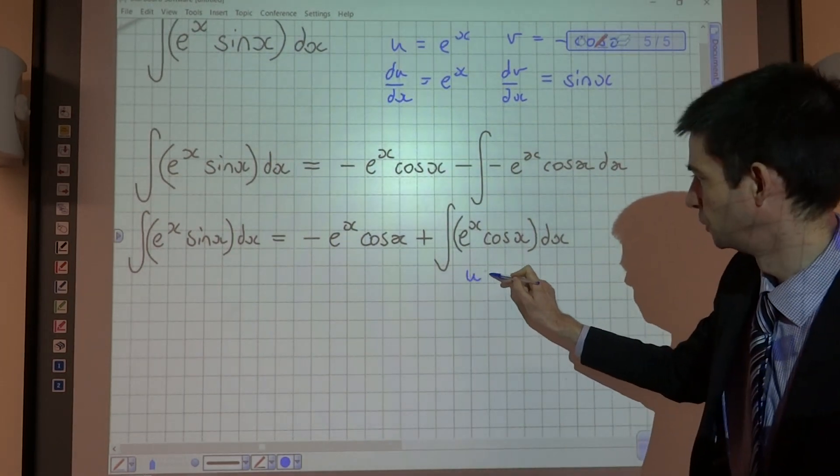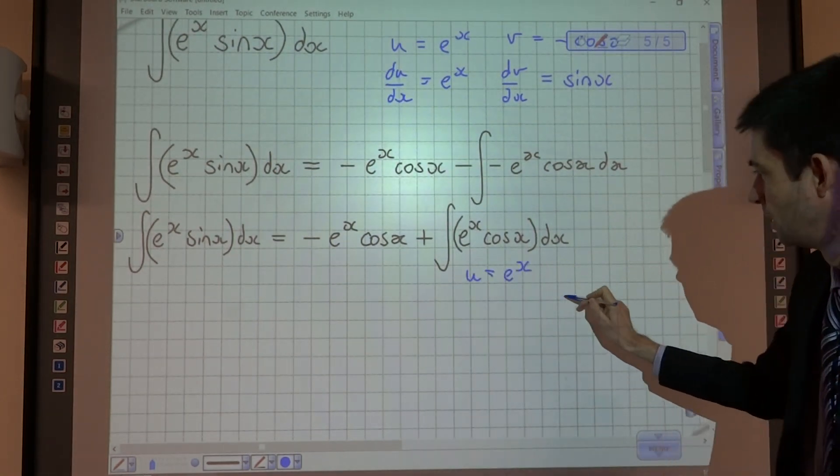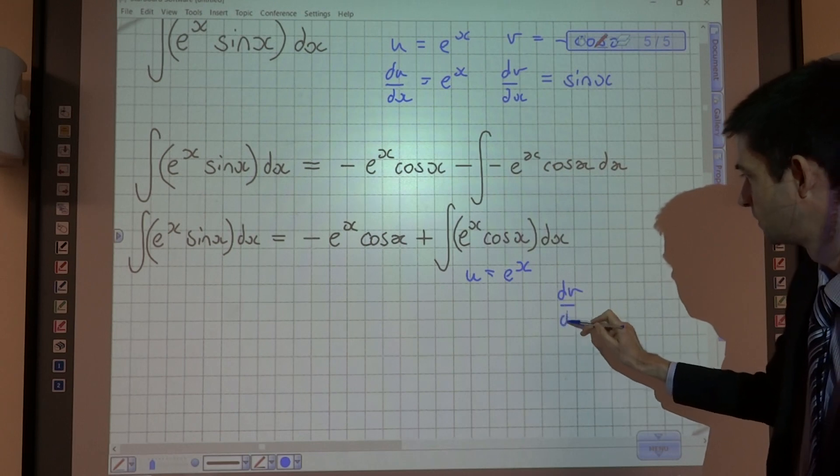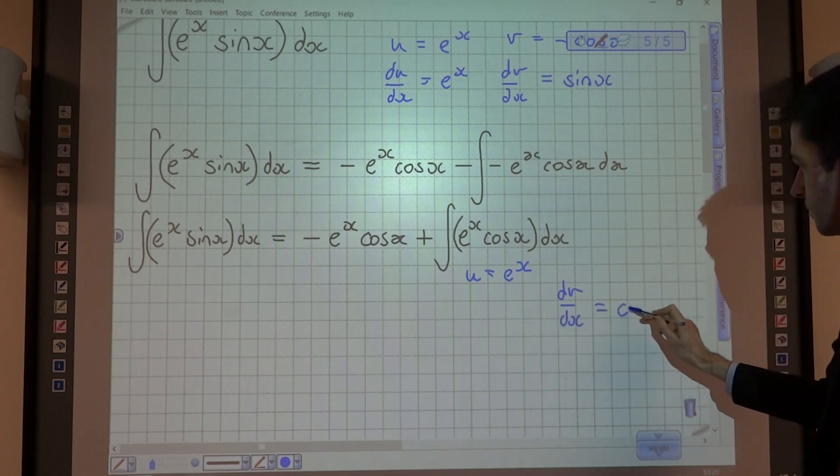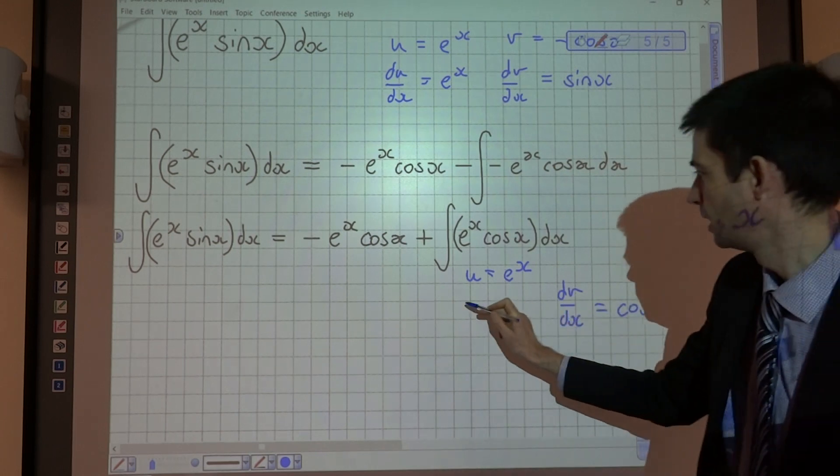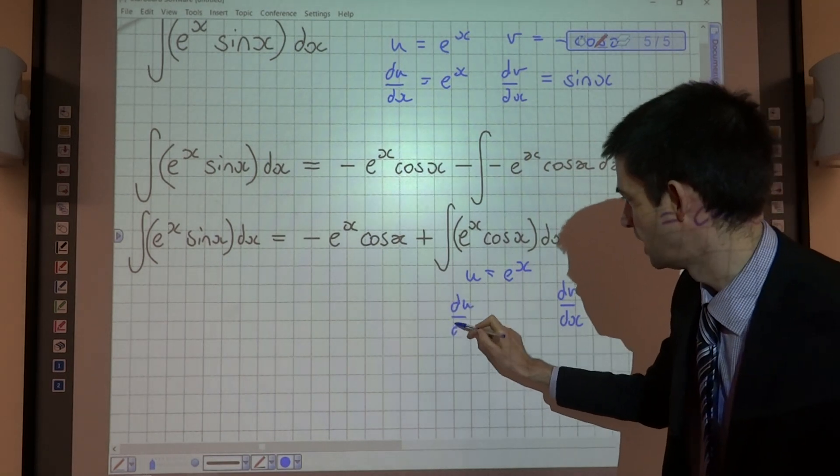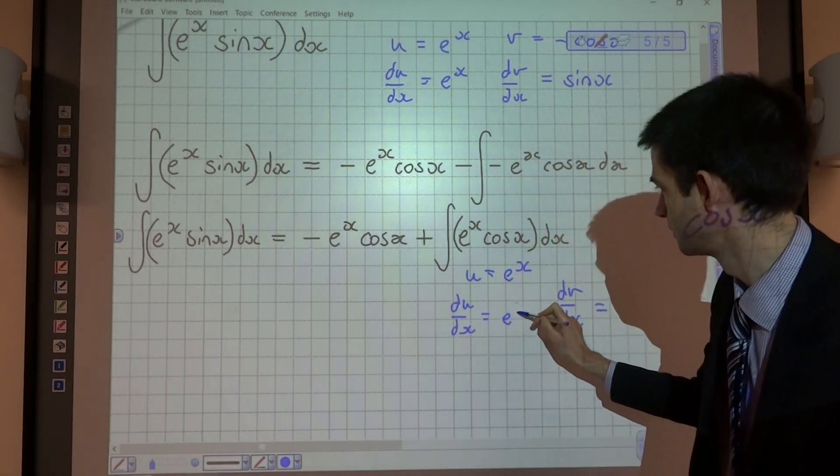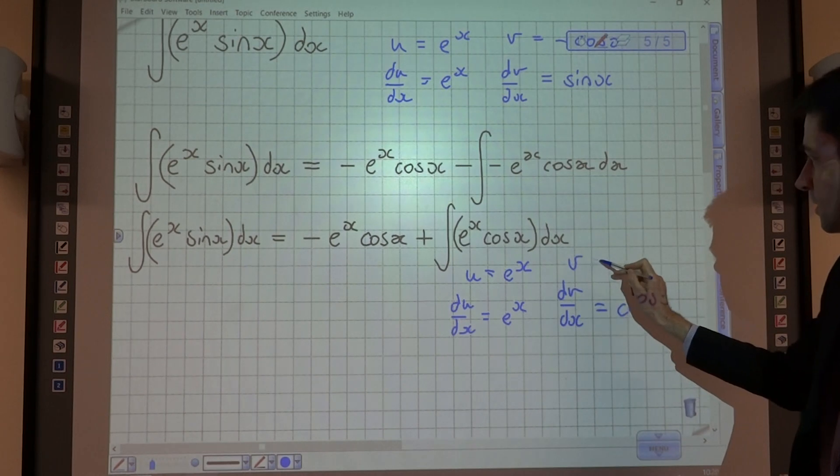So again, I'm going to call u e to the x and I'm going to call dv dx cos x and that's going to give me du dx is e to the x and v is sin x.